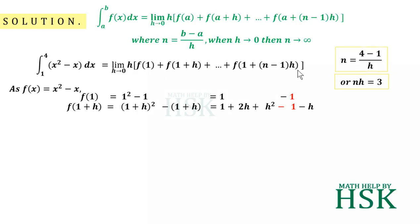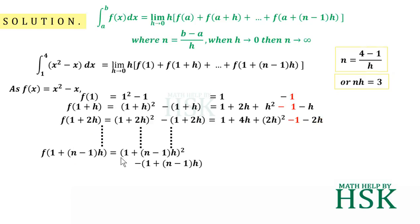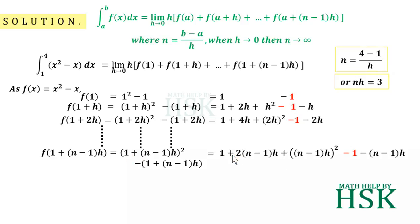My plan is to calculate this in a systematic manner so the question becomes very easy, and you can apply this approach to every similar problem. Similarly, f(1+2h) = (1+2h) whole squared minus (1+2h) = 1 + 4h + 2h squared minus 1 minus 2h. This continues up to the last term f(1+(n-1)h), which equals (1+(n-1)h) whole squared minus (1+(n-1)h), expanding to 1 + 2(n-1)h + (n-1)²h² minus 1 minus (n-1)h.